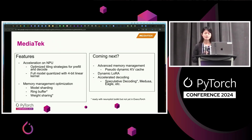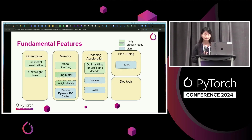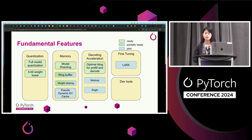MediaTek is our new partner. This year, we are working closely with them to integrate with ExecuTorch. The features listed are all the things they use to enable LLMs on NPU. For utilization, different tensor tiling is applied for prefill and decode. They also use GPT-Q-based quantization to enable 4-bit LLMs running on NPU. For memory, they shard the model to make it easier to allocate memory streams and use ring buffers to reduce cache traffic. Next, we can expect new KV cache management, more decoding acceleration algorithms, and LoRA fine-tuning.